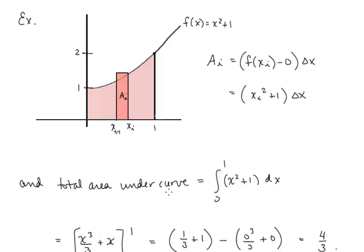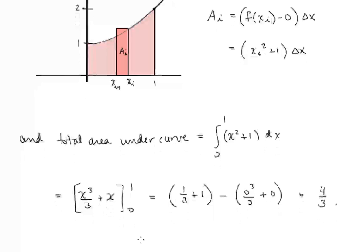The total area under the curve is the integral from 0 to 1 of x squared plus 1. We take our antiderivative, plug in the bounds, and subtract, and we get 4 thirds.